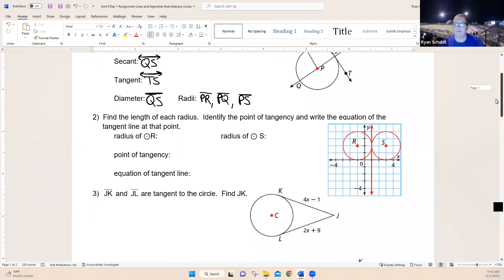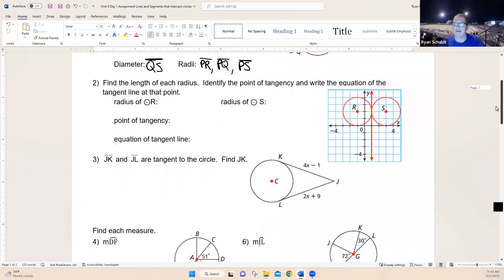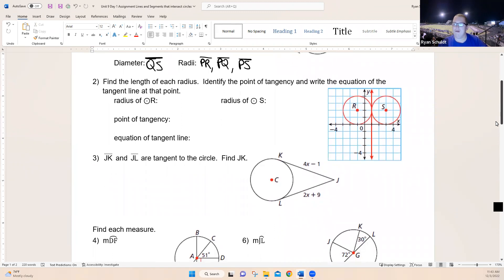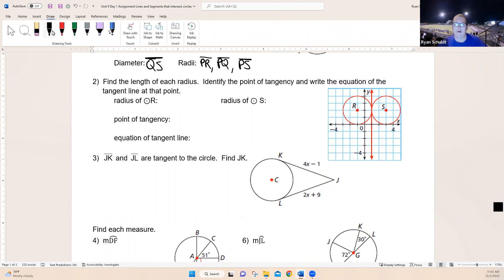Number two: Find the length of each radius, identify the point of tangency, and write the equation of the tangent line at that point. Okay, for circle R, we're going to start in the middle and go to the edge—one, two—so our radius for circle R is equal to two units. Then we do the same for circle S. One, two, it's also two units.